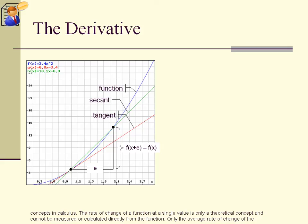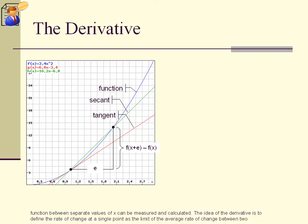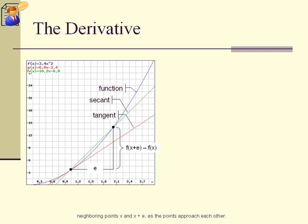The rate of change of a function at a single value is only a theoretical concept and cannot be measured or calculated directly from the function. Only the average rate of change of the function between separate values of x can be measured and calculated. The idea of the derivative is to define the rate of change at a single point as the limit of the average rate of change between two neighboring points x and x plus e, as the points approach each other.